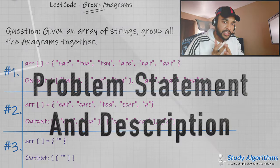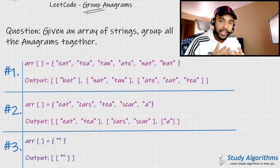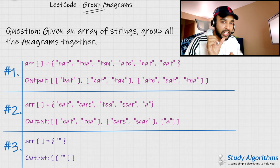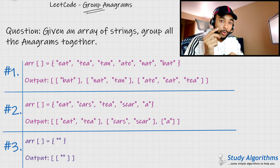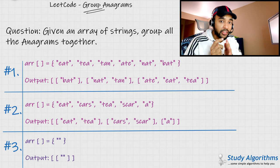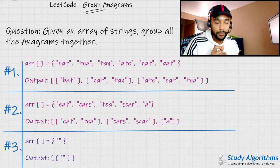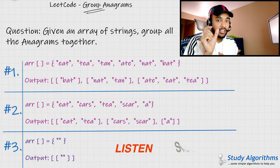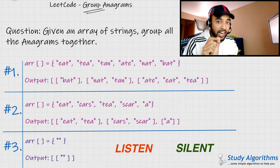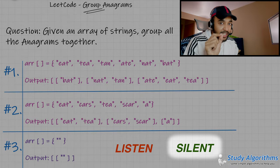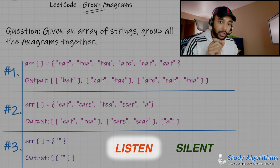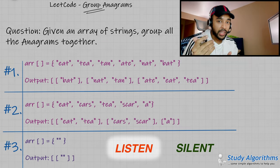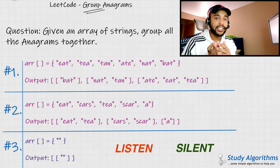The problem here is pretty straightforward. You are given an array that has some strings and you want to group all of the anagrams together. All you need to know is what anagrams are. Two strings are basically said to be anagrams if they are made up of the same number of characters. If you look at the word 'listen' and the word 'silent', you can see that they have the same characters and the frequency of each character is also the same. And hence, silent and listen are said to be anagrams of each other.